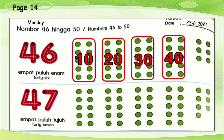Very good. Now let's count the balance: 1, 2, 3, 4, 5, 6. So we have 6. 40 and 6 together will be 46. Very good.